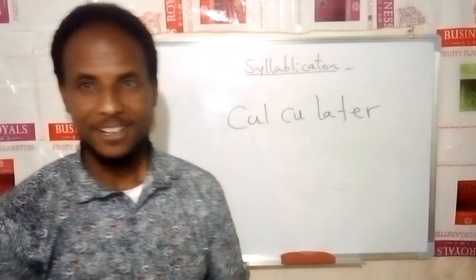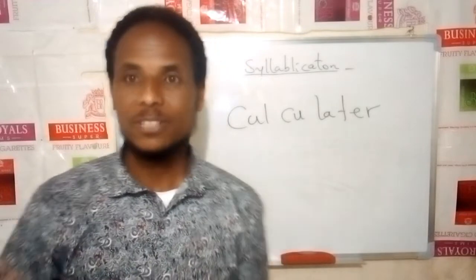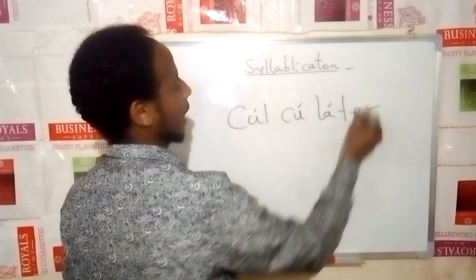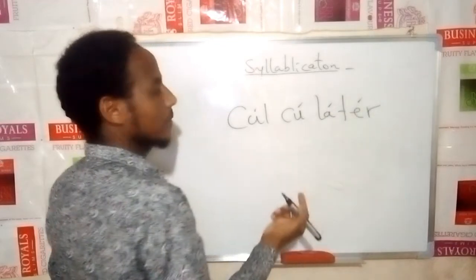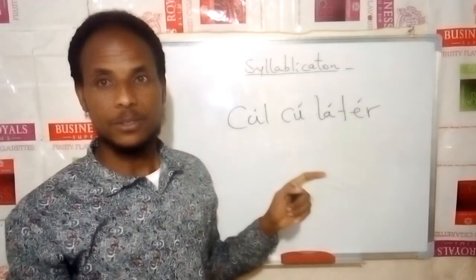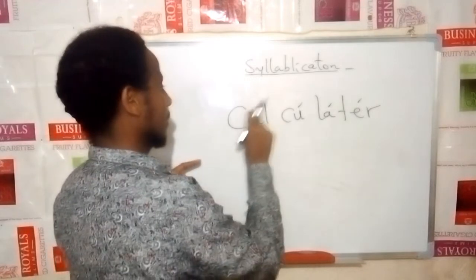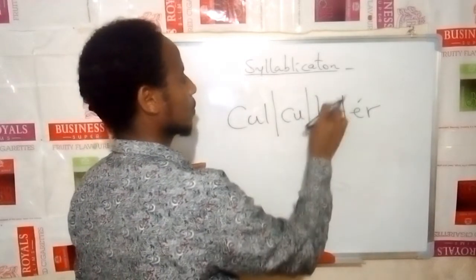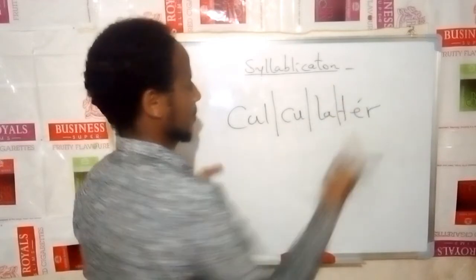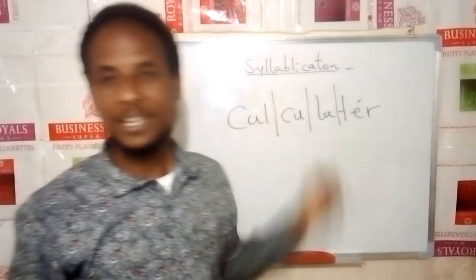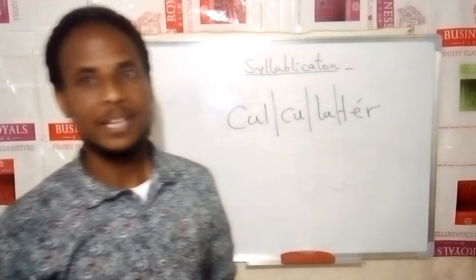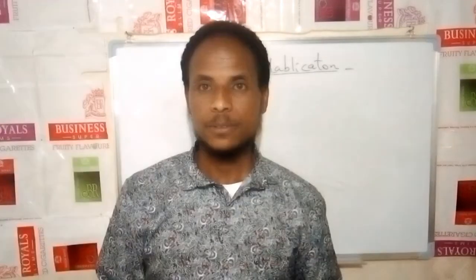What about 'calculator'? Count the vowel sounds: A, U, A, and E — four vowel sounds. So 'calculator' is syllabified as: cal-cu-la-tor. It is a four-syllable word. Also note: suffixes and prefixes are treated as separate syllables.